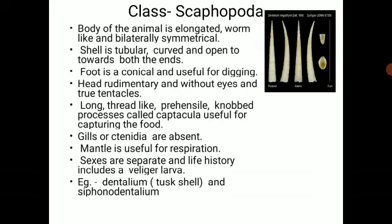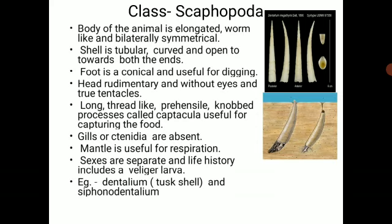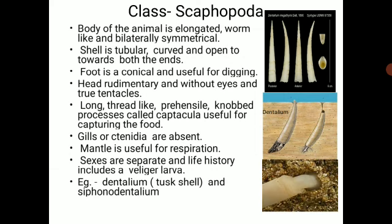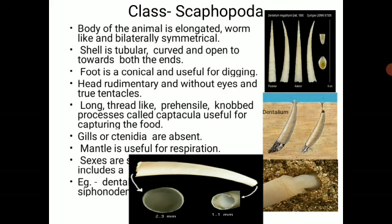The examples are Dentalium, also called tusk shell, and Siphonodentalium. Observing Dentalium, this is the soft-bodied animal that comes outside the tubular shell. You can partially observe the tubular shell. This is about the class Scaphopoda.